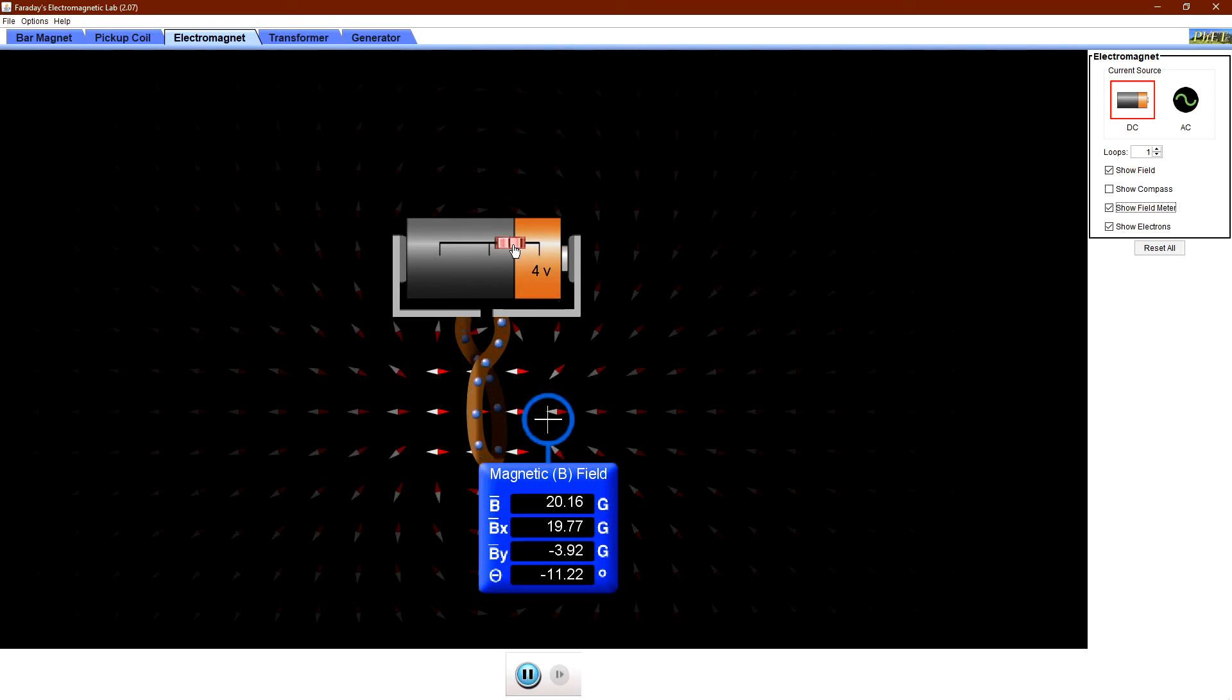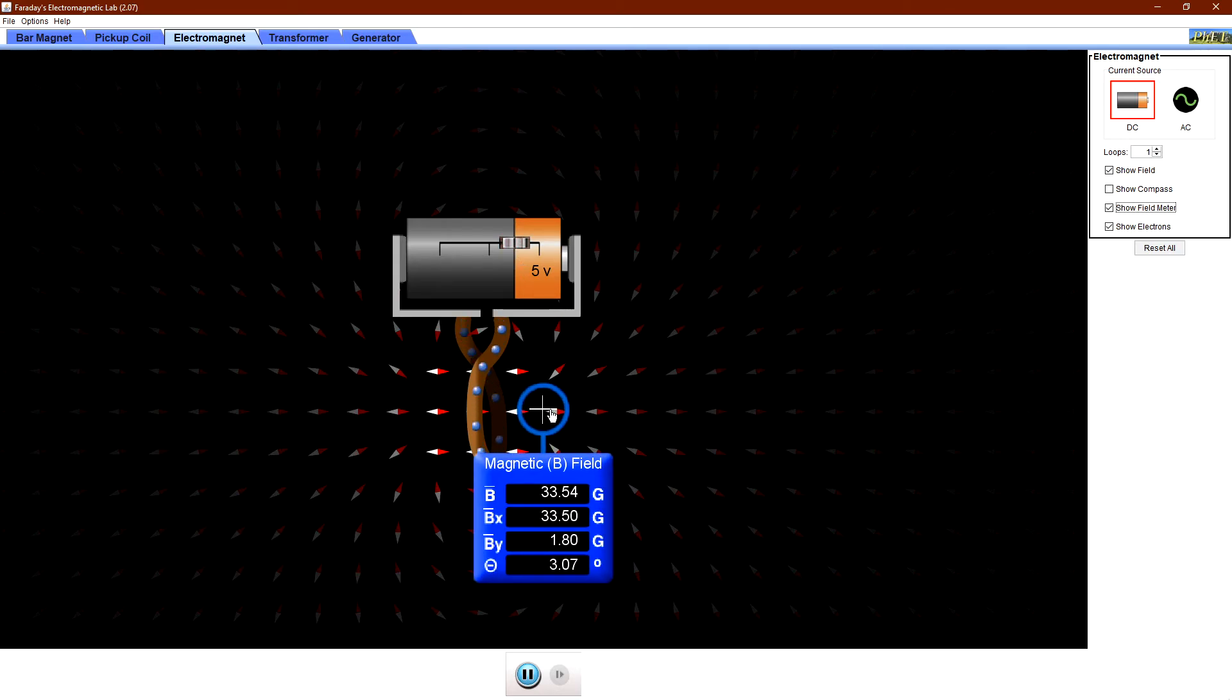You see, as I increase the current, magnetic field also increased, and if I decrease it, it's decreased. Now I will not change the magnitude of the current; I will change only the number of coils.